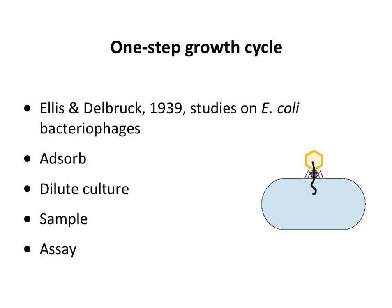Now let's talk about how we study viruses using the infectious cycle as a tool. What we do in virus laboratories is to use what's called a one-step growth cycle. This is a technique developed in the 1930s by bacteriophage virologists, in particular Max Delbrück and Emory Ellis, who published this in 1939.